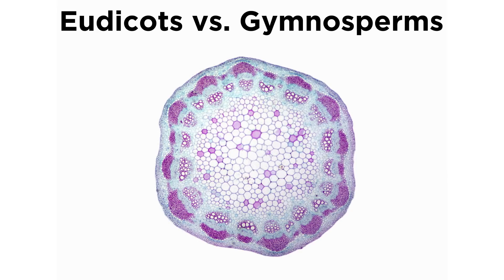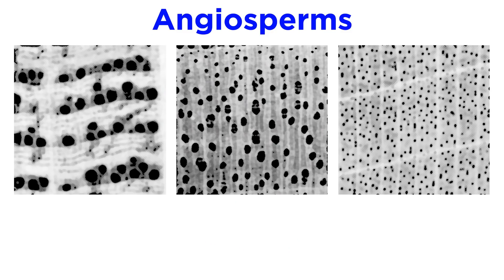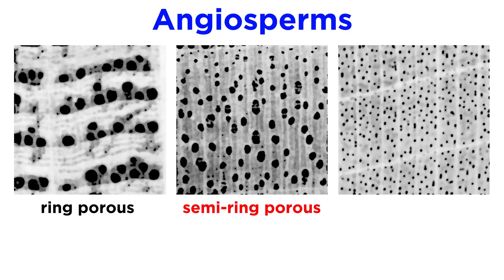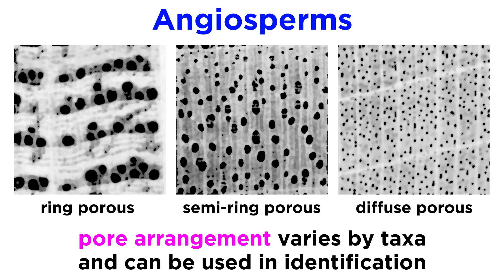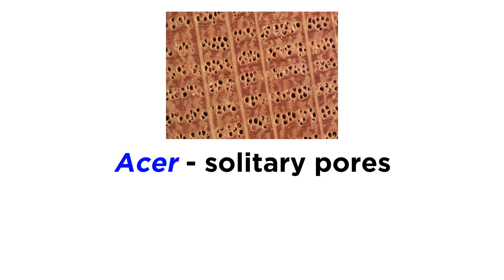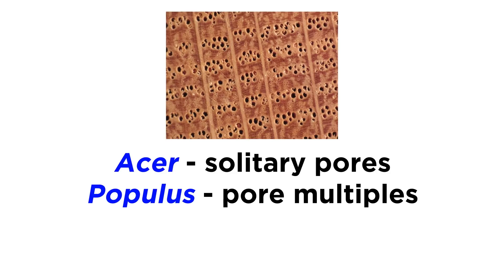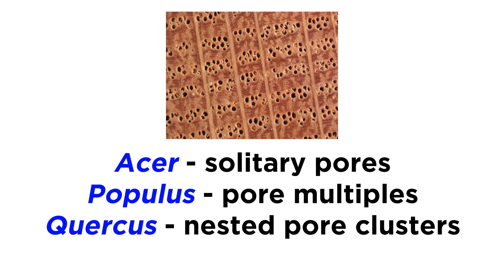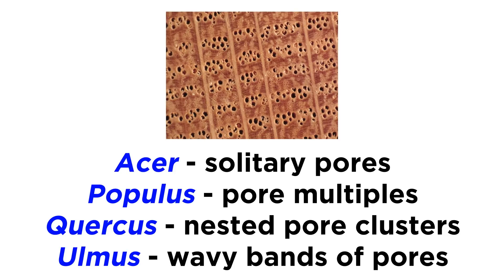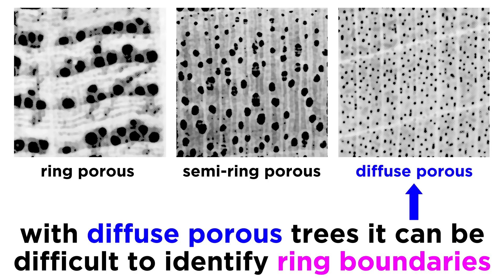Cross-sectional views of a eudicot and a gymnosperm look very different from one another, because gymnosperms do not have pores. Angiosperms, on the other hand, can be ring porous — with a row of vessels at the beginning of each ring — semi-ring porous, with some vessels at the beginning of the ring, or diffuse porous, with vessels distributed throughout the ring. Pore arrangement in angiosperms varies by taxa and can be used in identification. For example, the rings of the genus Acer have solitary pores, Populus have pore multiples, Quercus have nested pore clusters, and Ulmus have wavy bands of pores. Diffuse genera in particular are more challenging to study, because the trees produce a large number of pores throughout a ring, making it difficult to identify a ring boundary.